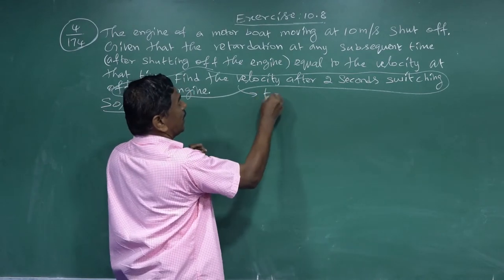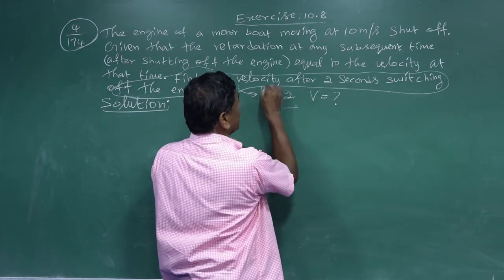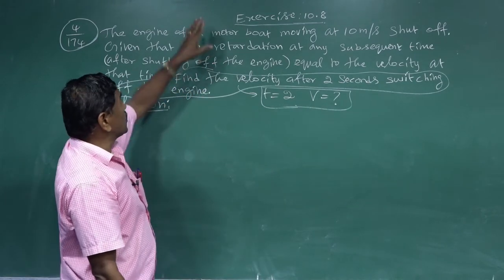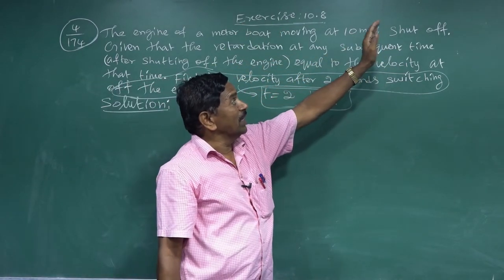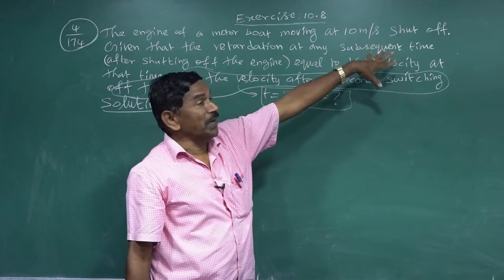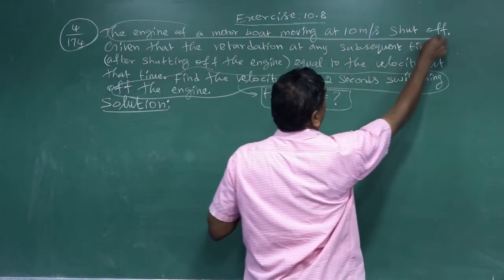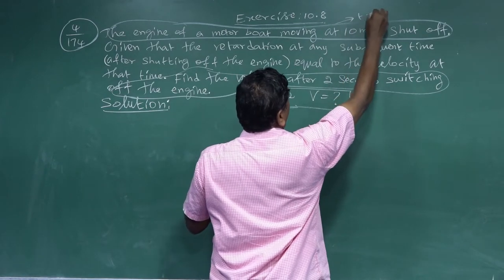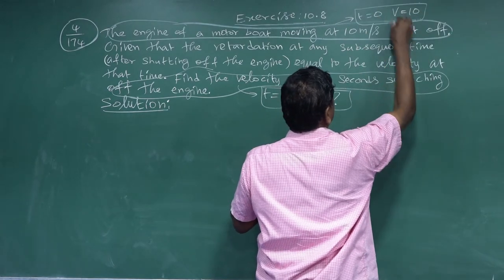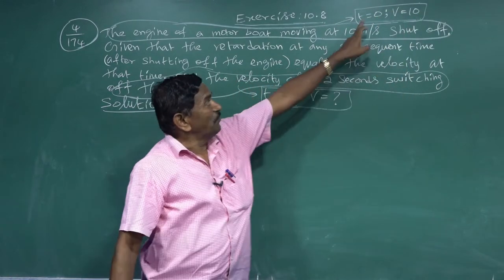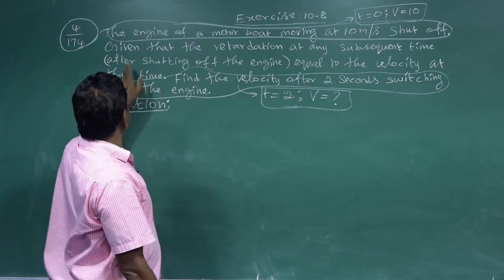We identify two conditions. The first condition: when t is equal to 0, the velocity v is equal to 10 meters per second — this comes from the engine being shut off initially. The second condition: when t is equal to 2 seconds, the velocity v is equal to the unknown value we are asked to find.